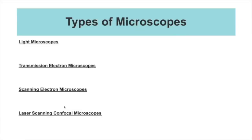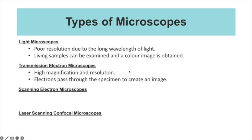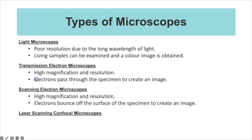The first thing you need to know is about the four different types of microscopes. For light or optical microscopes, they have a poor resolution because of the wavelength of light, which is used to create the image. You can use living samples and get a colour image. Transmission electron microscopes have a much higher magnification and resolution, and the electrons pass through the specimen to create an image.